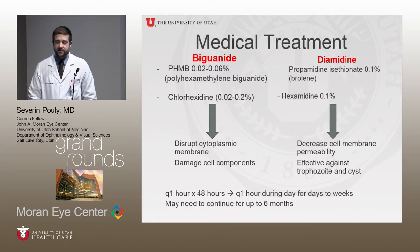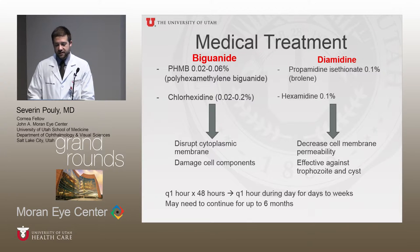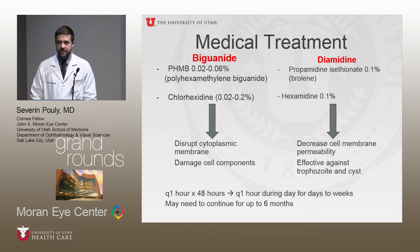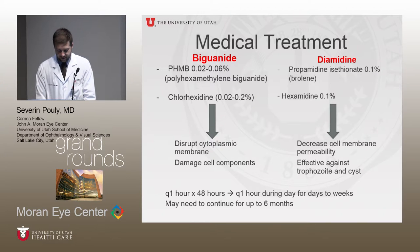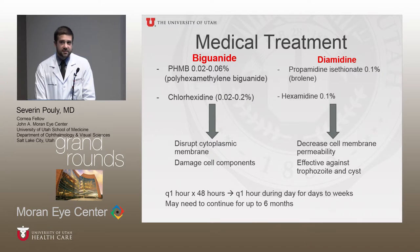The recommended regimen is every hour around the clock for the first 48 hours, then decreasing to every hour for days to weeks depending on clinical response. Therapy may need to be continued for up to six months because of cysts penetrating into the deep stroma, and some recommend continuing for up to a year.